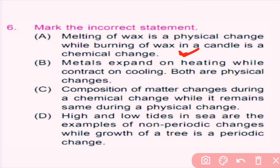Option C — composition of matter changes during chemical change while it remains the same during physical change — is correct, because in chemical change a new product is formed with a composition different from the reactant. Option D — high and low tides in the sea are examples of non-periodic change while growth of a tree is a periodic change — is an incorrect statement, because high and low tides occur again and again after a fixed interval of time, making them periodic. Growth of a tree is unpredictable, so it is non-periodic.